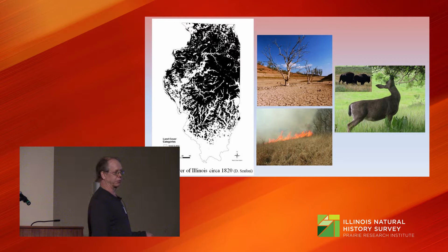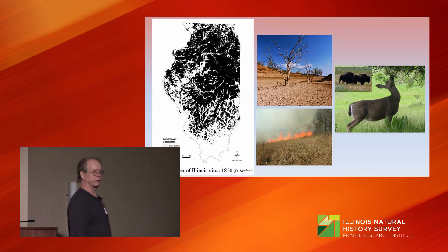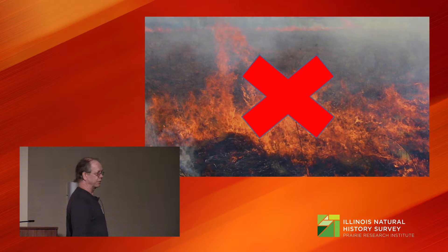Today, we still have periodic drought. We still have grazing animals, bison notwithstanding. Fire? Not so much. We burn our small prairie preserves once in a while, and we get some fires in some of our woodland habitats, but we get them burned at times we can control the fire, rather than when fire can control woody encroachment.